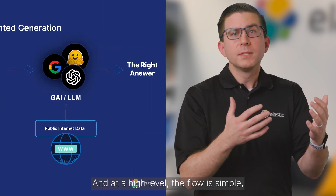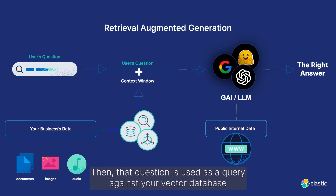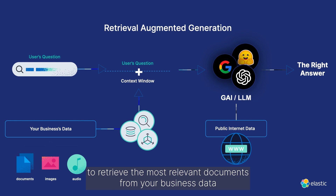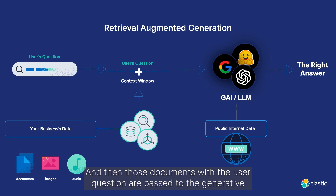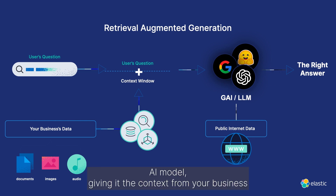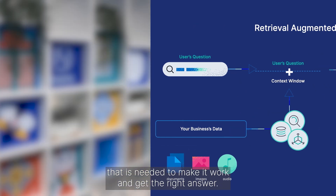And at a high level, the flow is simple. The user writes their question. Then that question is used as a query against your vector database to retrieve the most relevant documents from your business data that contain the answer to their question. And then those documents with the user question are passed to the generative AI model, giving it the context from your business that is needed to make it work and get the right answer.